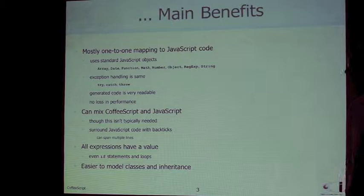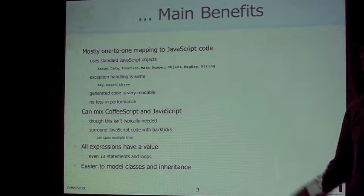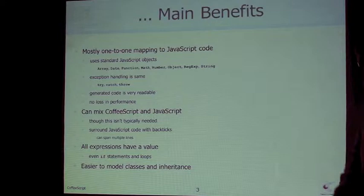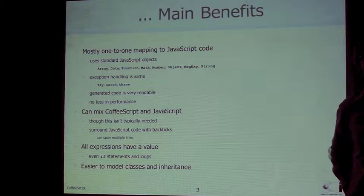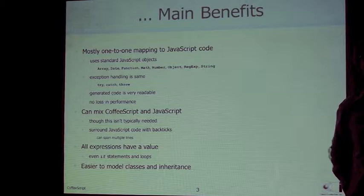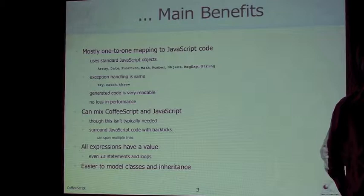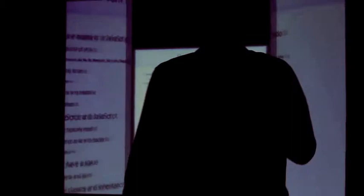In CoffeeScript, all expressions have a value — even things like an if statement or a loop. If I have a for loop, the result of that is an array which is the last expression in each iteration of the loop. It's easier to model classes and inheritance; CoffeeScript gives you a class keyword so you can define classes more like other languages. What's happening underneath is that it compiles that to standard JavaScript patterns for implementing something like a class.